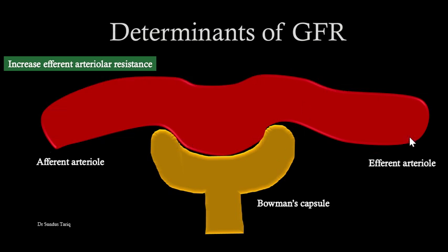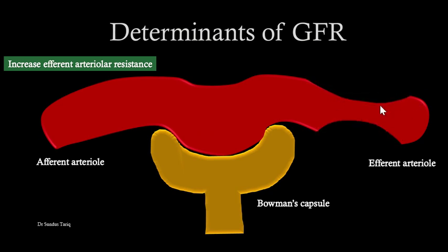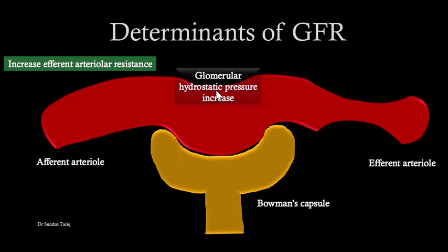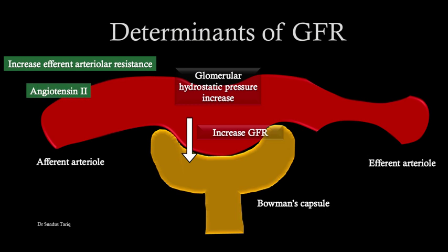Regarding the efferent arteriole: when there is increased efferent arteriolar resistance due to constriction at this point, because fluid is flowing from the glomerulus through the efferent arteriole, constriction increases pressure in the glomerular area. This increased pressure leads to an increase in glomerular hydrostatic pressure and ultimately increases GFR. The most important substance causing efferent arteriolar resistance is angiotensin II. The efferent arteriole is very sensitive to angiotensin II; whenever angiotensin II is released, it causes constriction of the efferent arteriole, buildup of more pressure, and an increase in GFR.